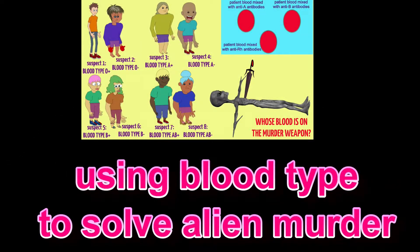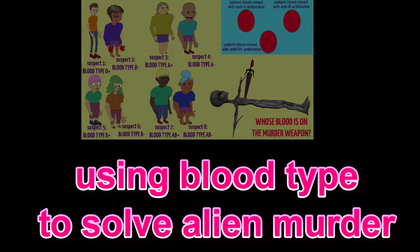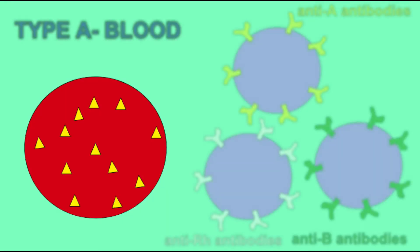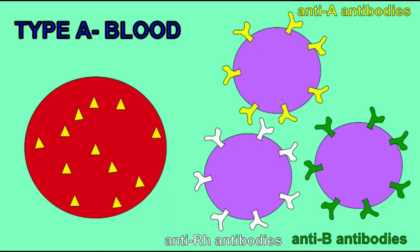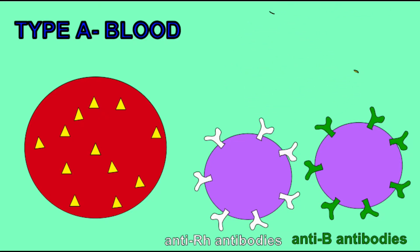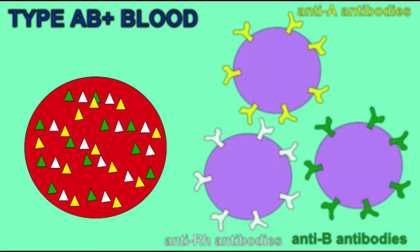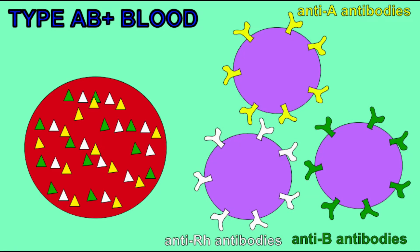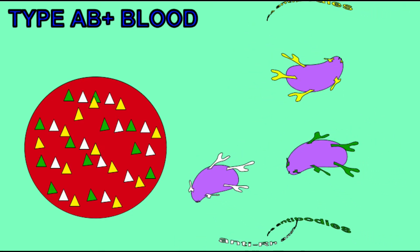Let's say that an alien doctor minding its own business is murdered by one of its patients. You, the investigator, are called to try to determine whose blood is on the murder weapon, given that all eight of the patients have different blood types.